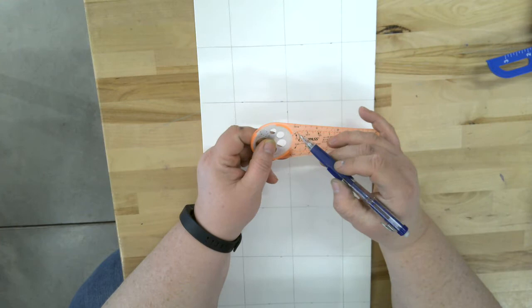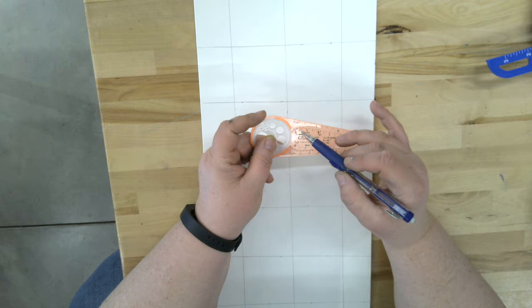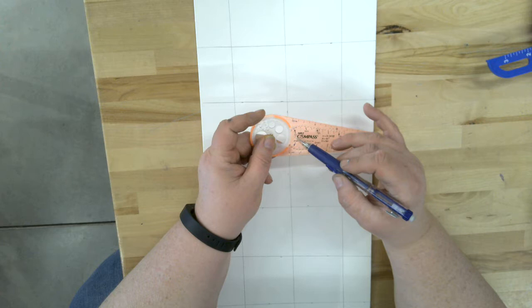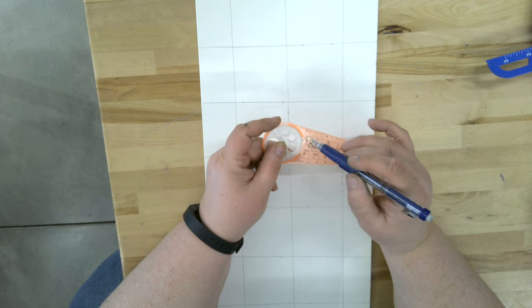So we're using an inch and one-sixteenth radius. So if you look right here, there's one dot, two dots, and then there's a third dot there. Okay, the two dots, it says right here, one inch radius. So the next dot is an inch and one-sixteenth for a radius. So that's what we're going to use. So your pencil is going to go in that third dot there.